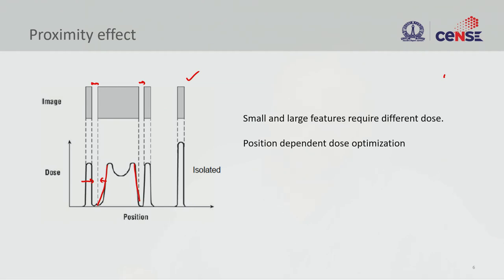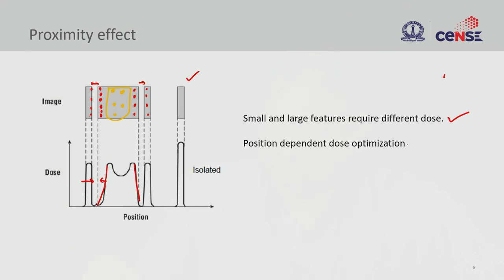The best way to handle this is to write large features and small features using different doses. In optical lithography you do not have this choice because you do full illumination, but in electron beam writing you are writing serially, so you can change your energy at different locations — reduce energy at edges — to address proximity effect. Position-dependent dose optimization is what you need, and this has to be done at the design level before writing.